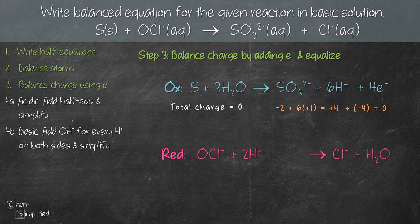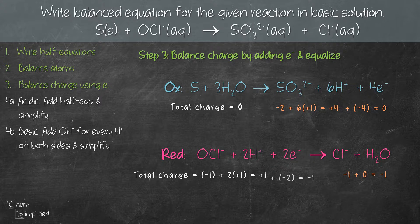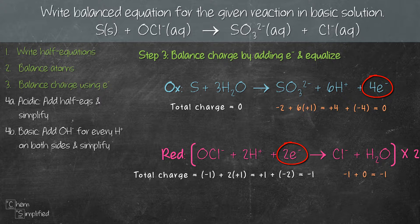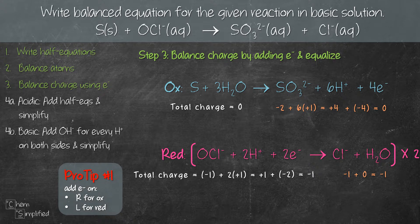For the reduction equation: the left-hand side has a total charge of +1, and the right-hand side has a total charge of -1. To balance the charge, we add 2 electrons on the left-hand side, giving us -1 on both sides. Now we need to make sure the number of electrons in both equations are the same. The oxidation equation has 4 electrons and the reduction equation has 2, so we multiply the entire reduction equation by 2 to get 4 electrons. Remember: always add electrons on the right-hand side for oxidation and on the left-hand side for reduction.